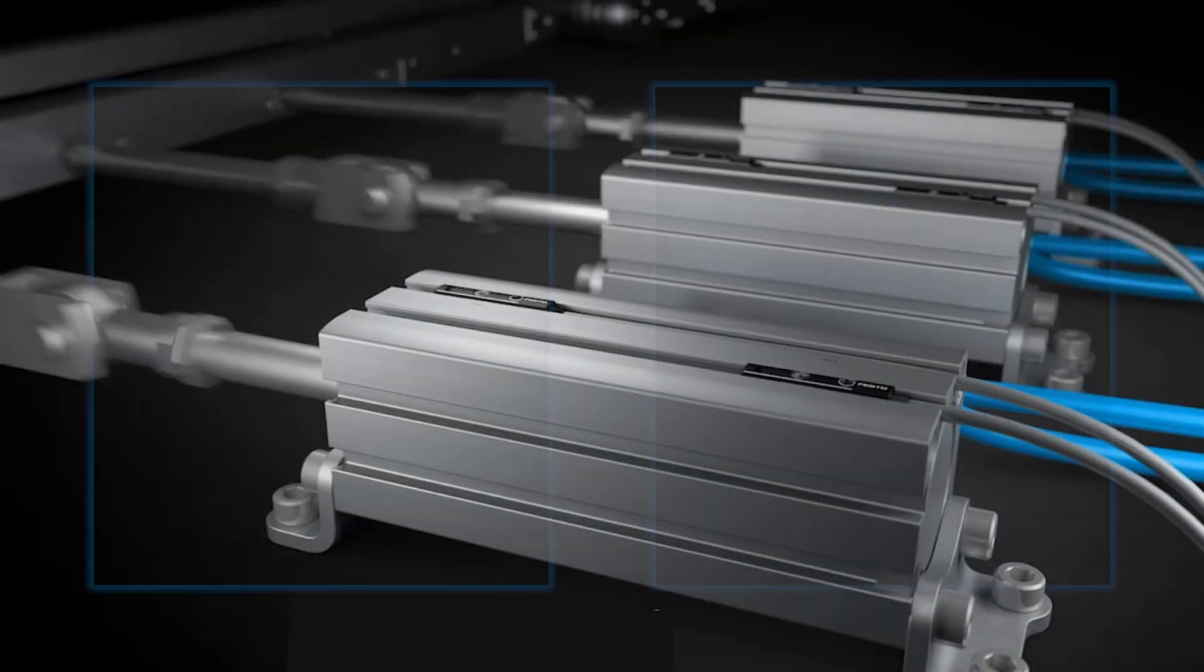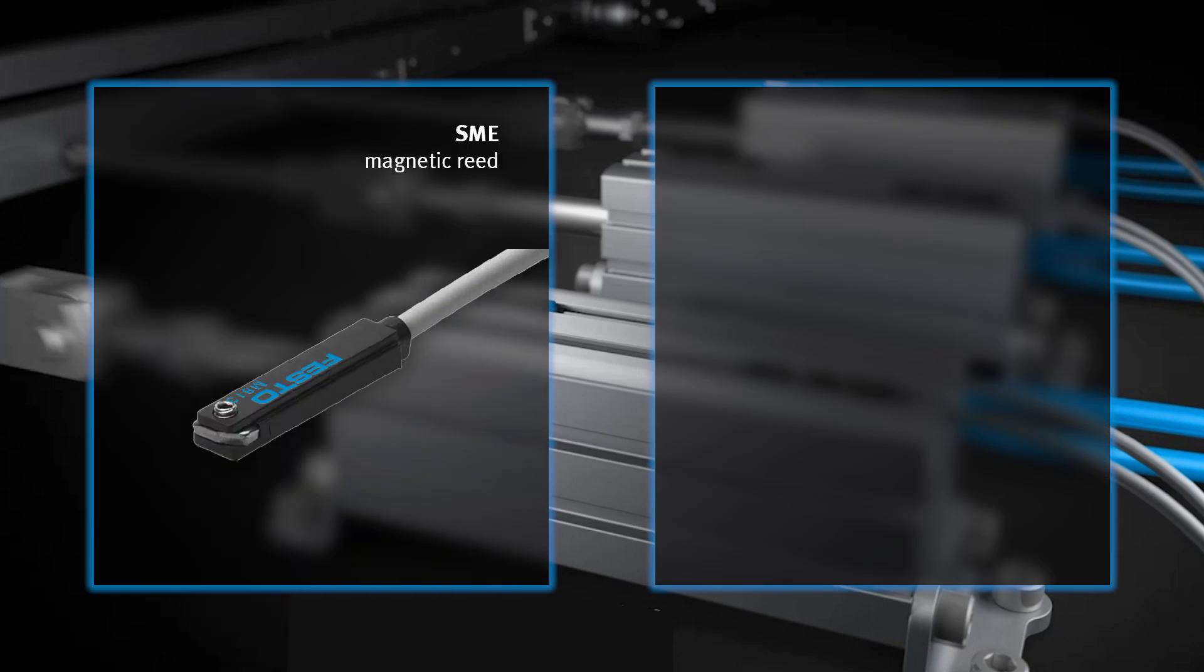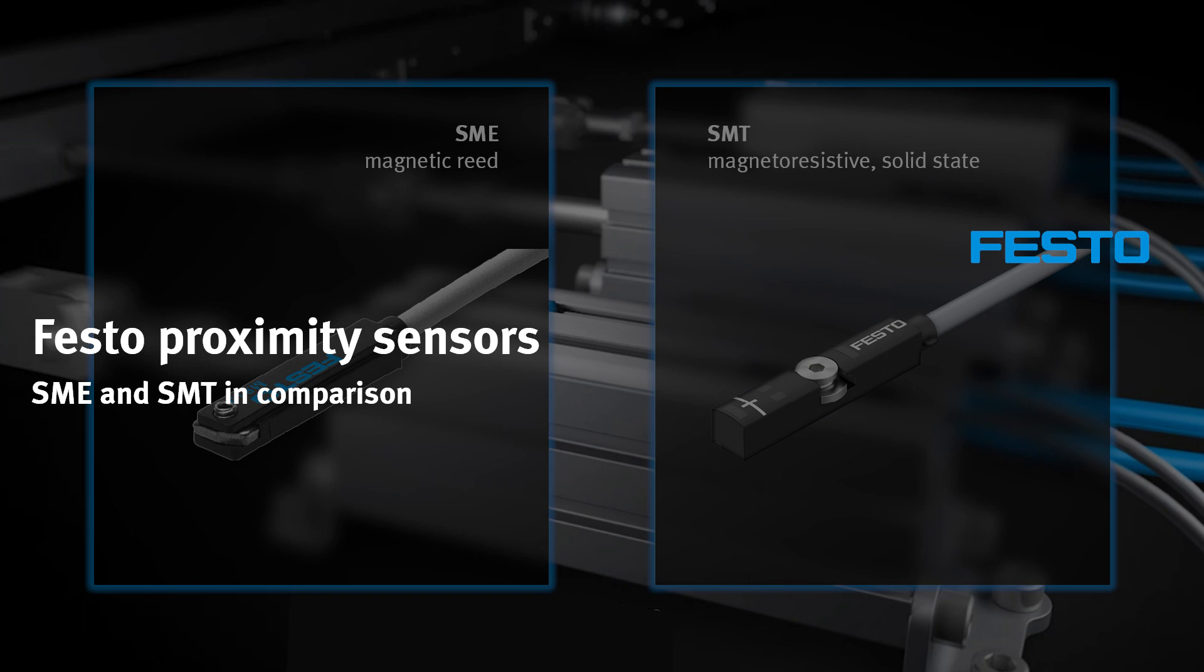Festo offers the two proximity sensors SME and SMT among others. But what is the difference? And which sensor is better suited to your application? Let's take a look at the two sensors.